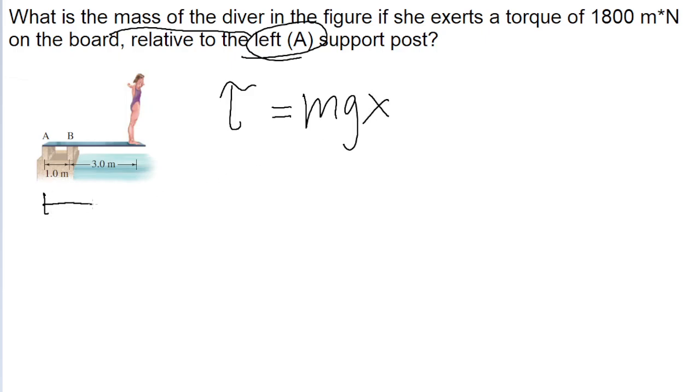And this is just defined to be the distance between point A and wherever they're situated. And from the diagram, we can see that this is 1 meter plus 3 meters, so this is a 4 meter distance.